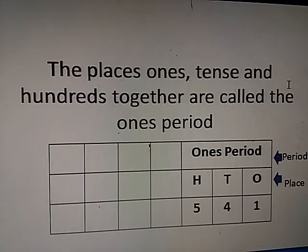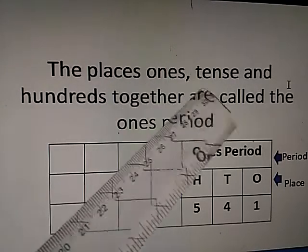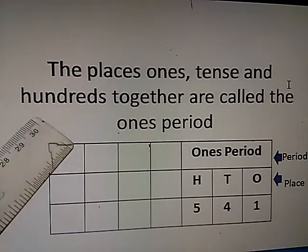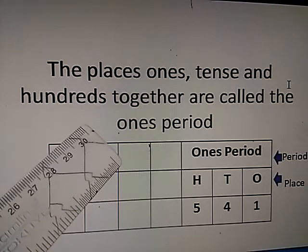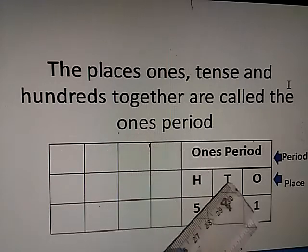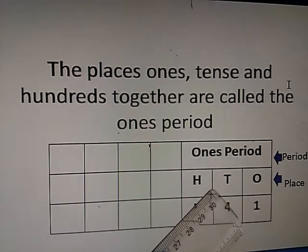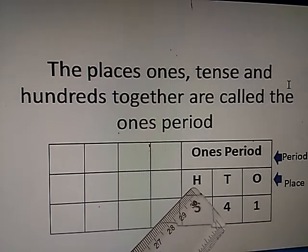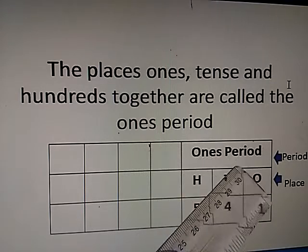The places ones, tens, and hundreds together are called the ones period. Remember: ones, tens, and hundreds place — these three places are called the ones period.